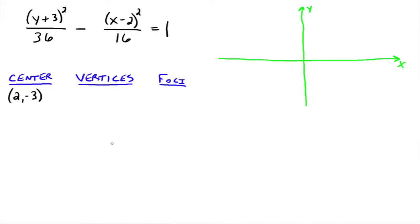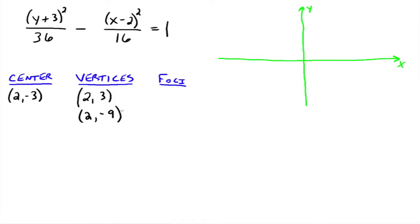So will we have a horizontal or a vertical transverse axis? It's going to be vertical because we have y squared minus x squared. So the vertices would be — if it's a vertical transverse axis, we add the a value, which is 6 (since this is a squared, a = 6), to the y part of the center. So that would be (2, -3+6) = (2, 3), and then (2, -3-6) = (2, -9).